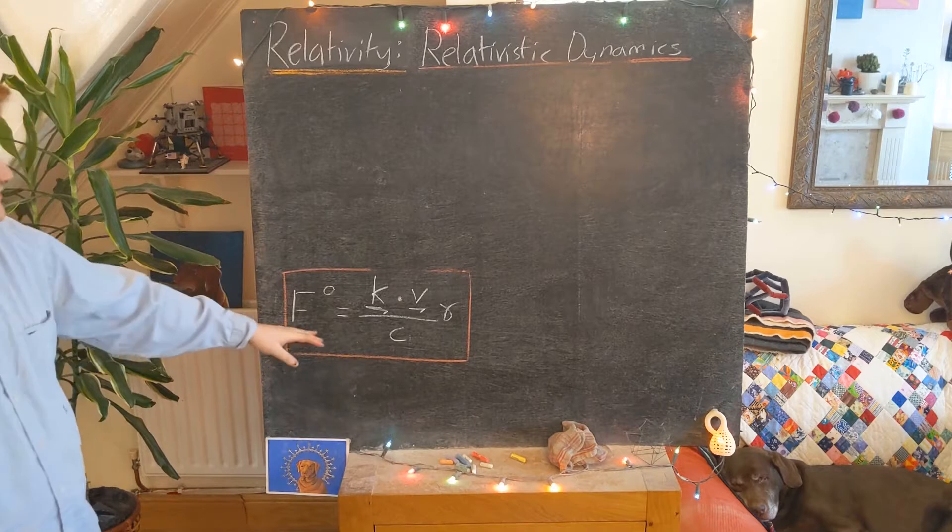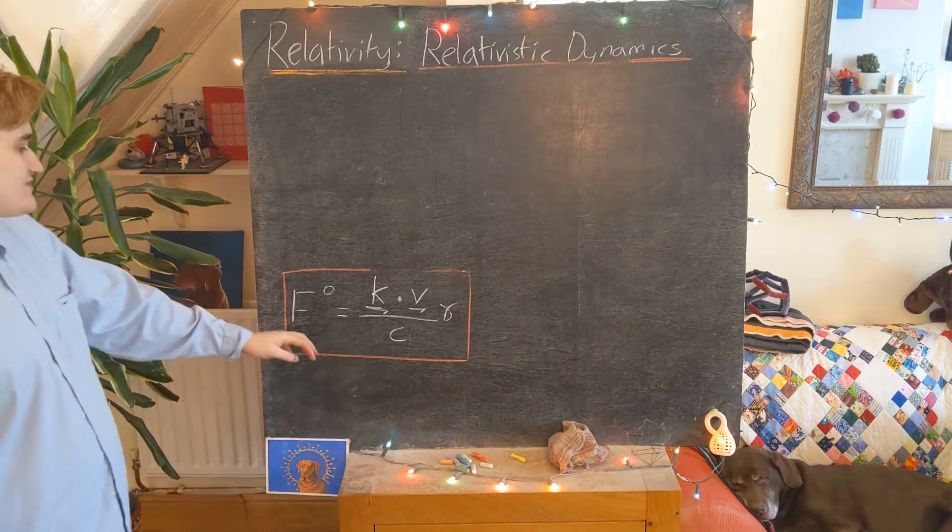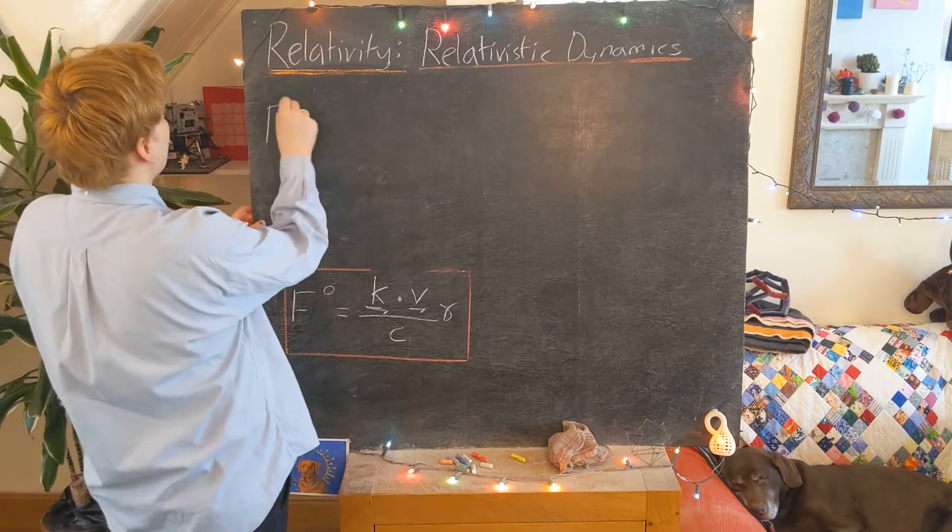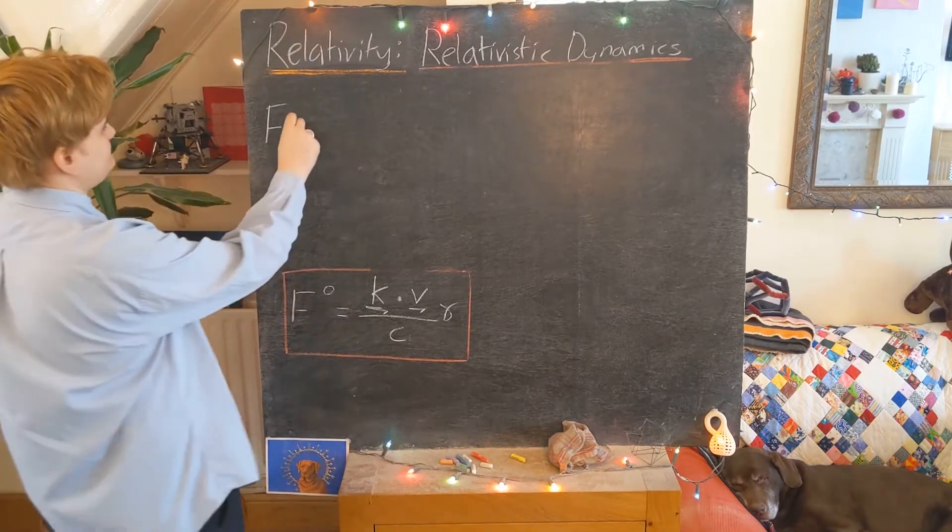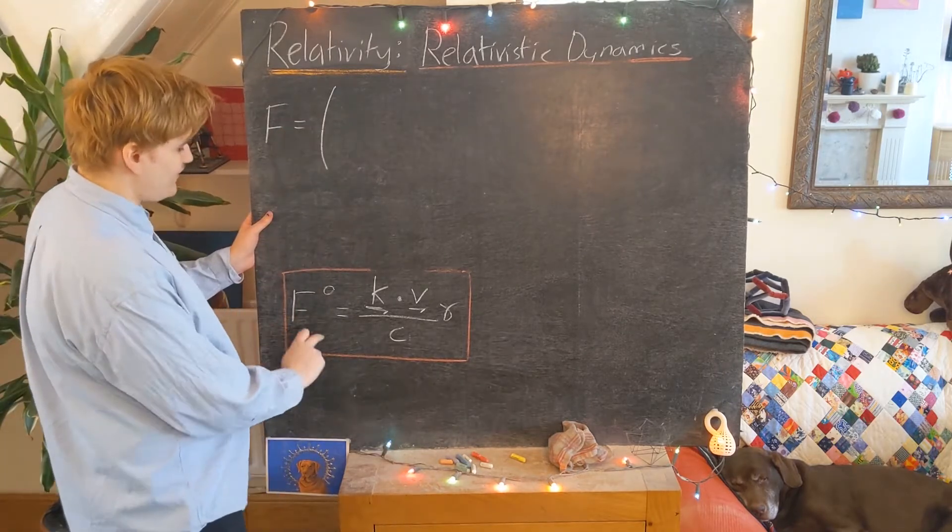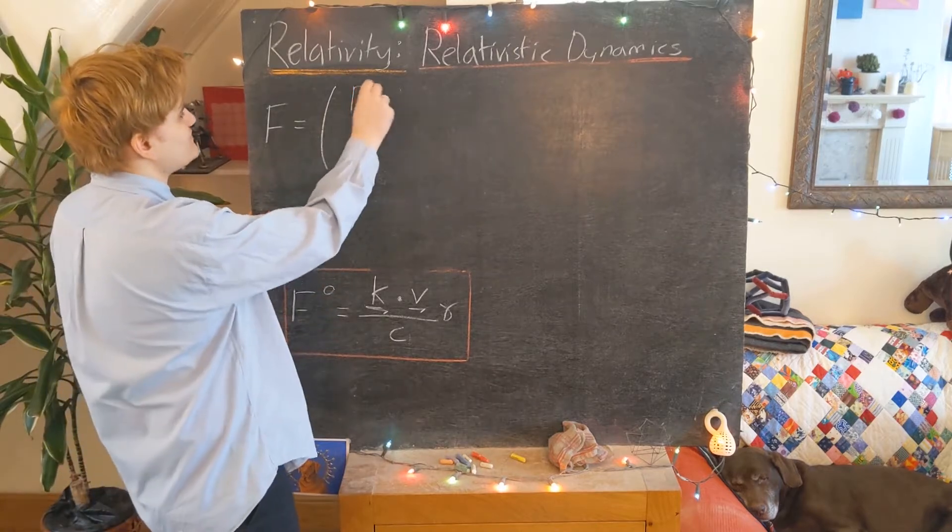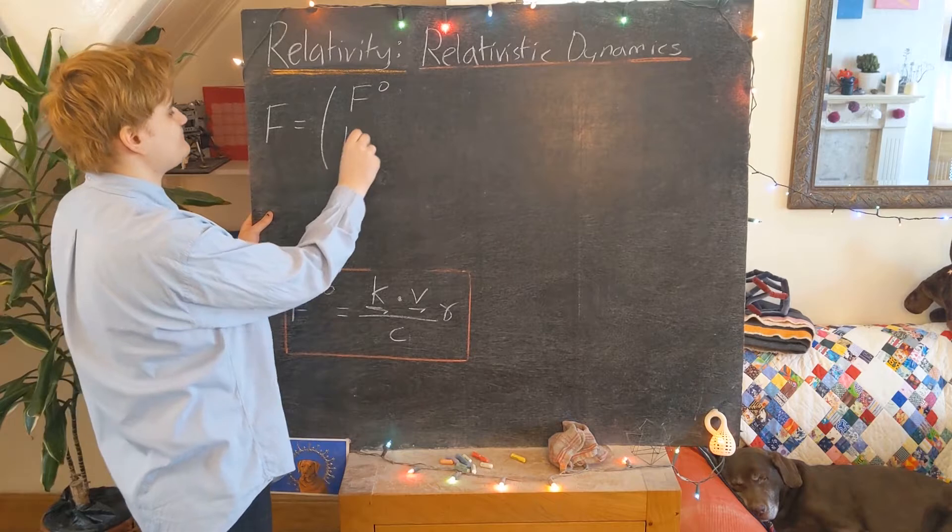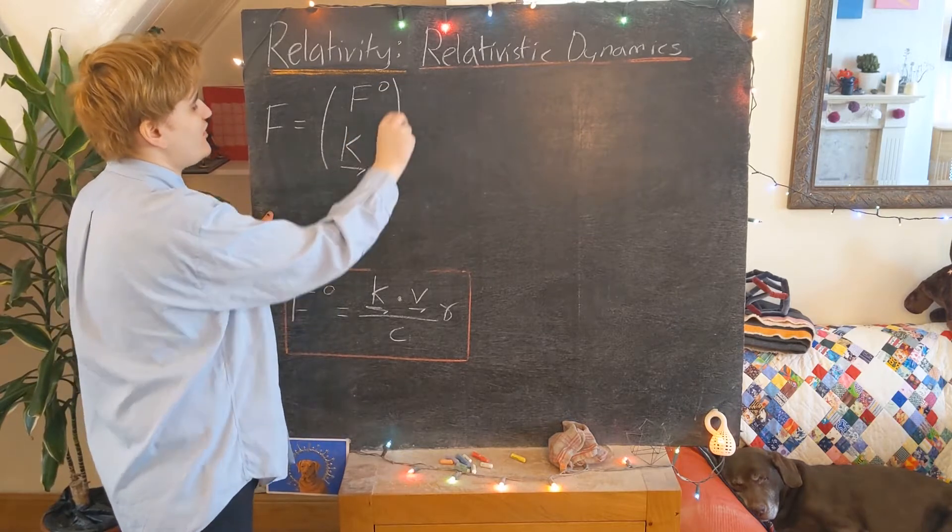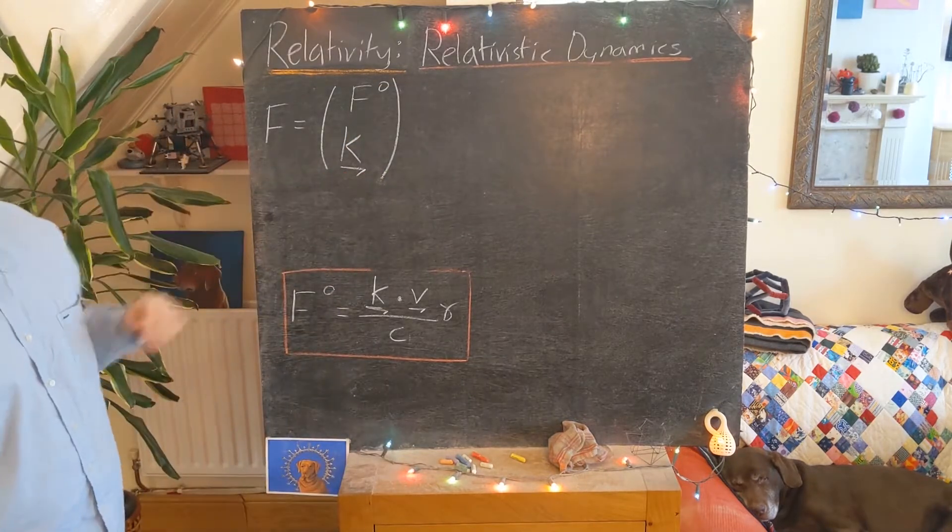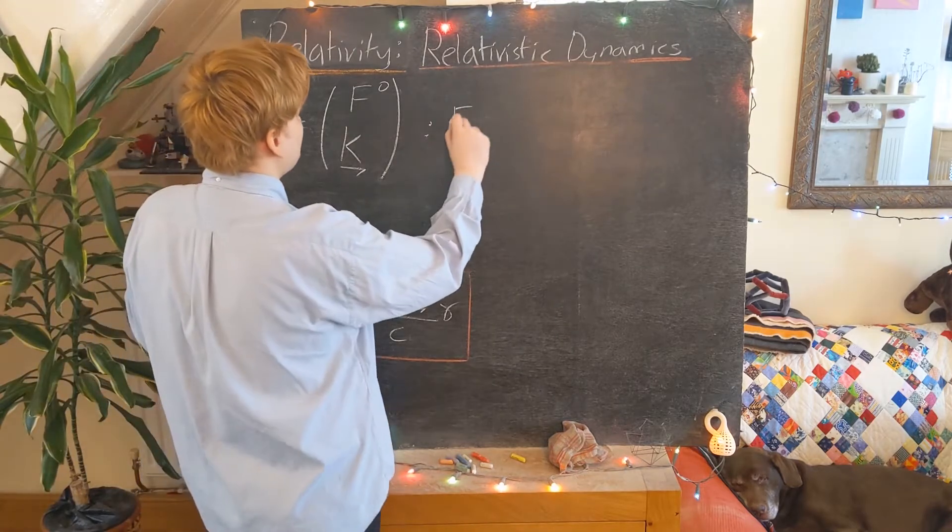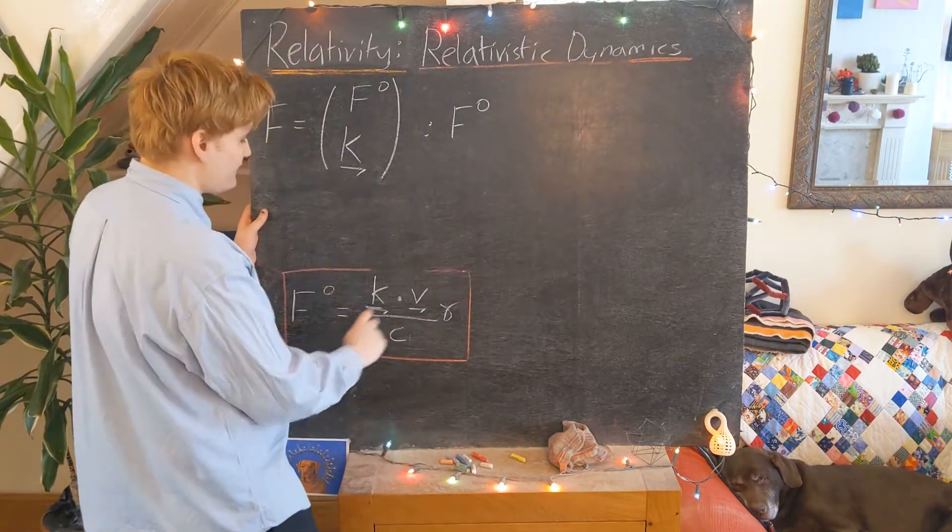All we need to express the four-force is just the three-force, or the spatial force, and our factor of gamma which comes from the velocity. We're going to explore now what this time component is representing. We're going to see that this time component is somehow related to the energy. We've got the four-force, we've now derived its time component, I'll keep it as F0 for now, and then its space component which is given by the effective force.